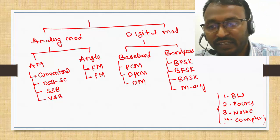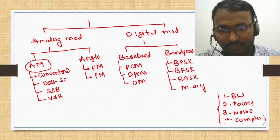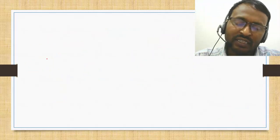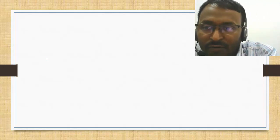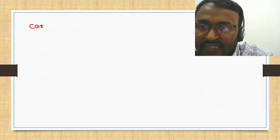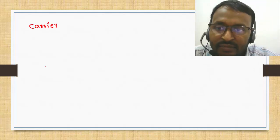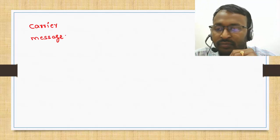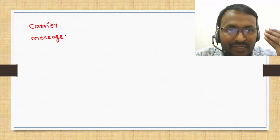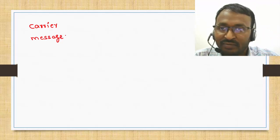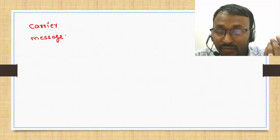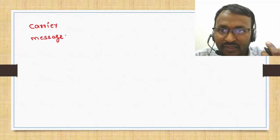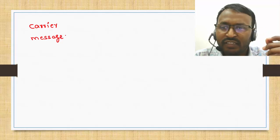Now we start our discussion with amplitude modulation. In every modulation scheme, we have two signals: first is the carrier signal, and second is the message signal. What is the message signal? If I am speaking something, that is a message. If I am listening to a song, that is a message. If I am watching a video, the video is a message. The message can be anything — audio, voice, video, or data.